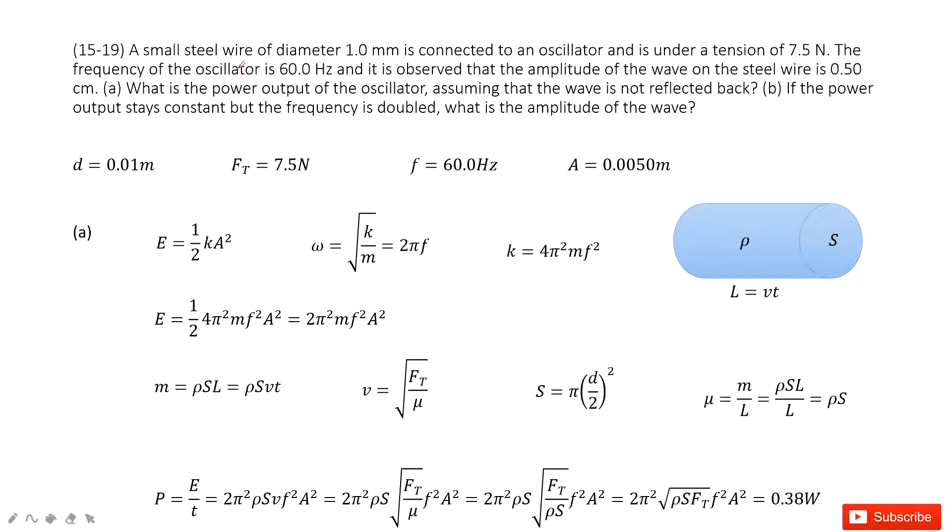Chapter 15 is about a steel cable. The diameter is given and the tension on this cable is given, and then the frequency for this oscillator is given and the amplitude for the wave is given. I ask you to find the power output of the oscillator.